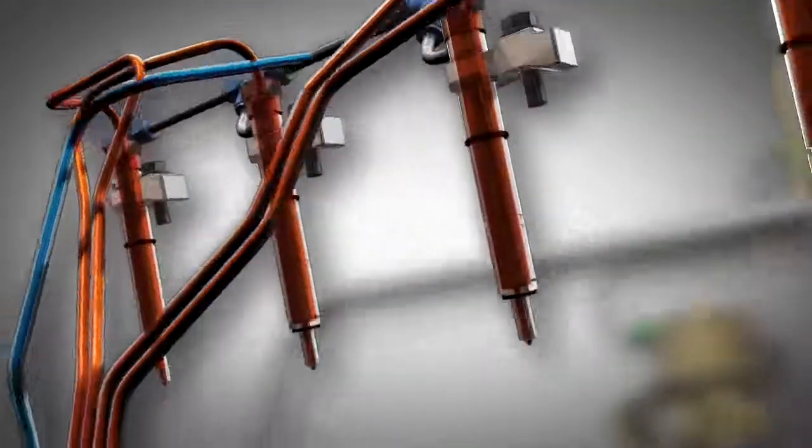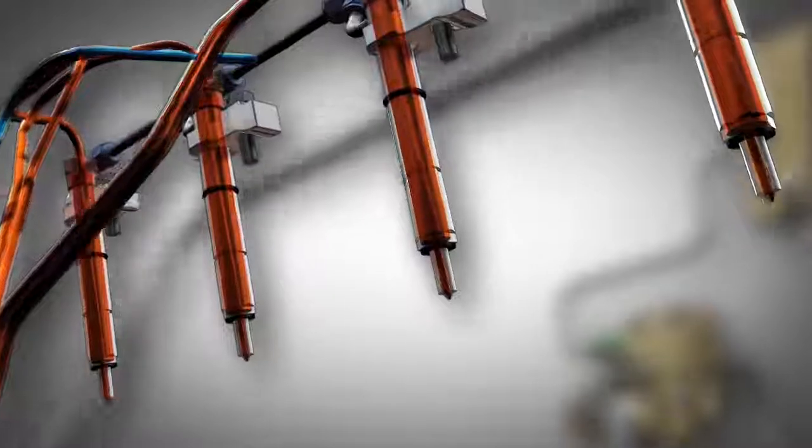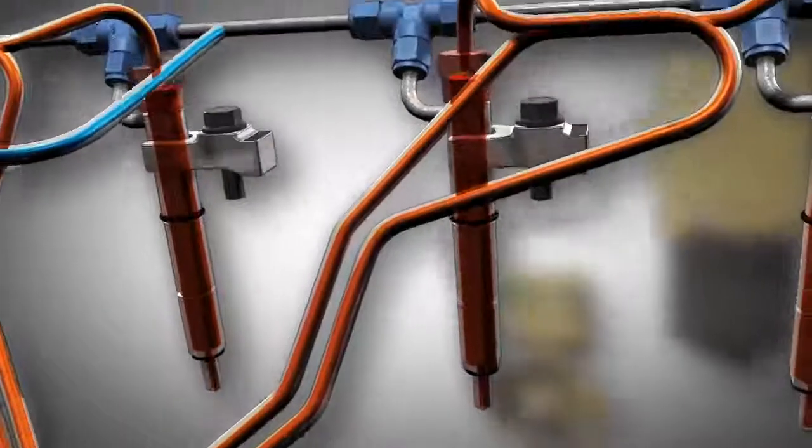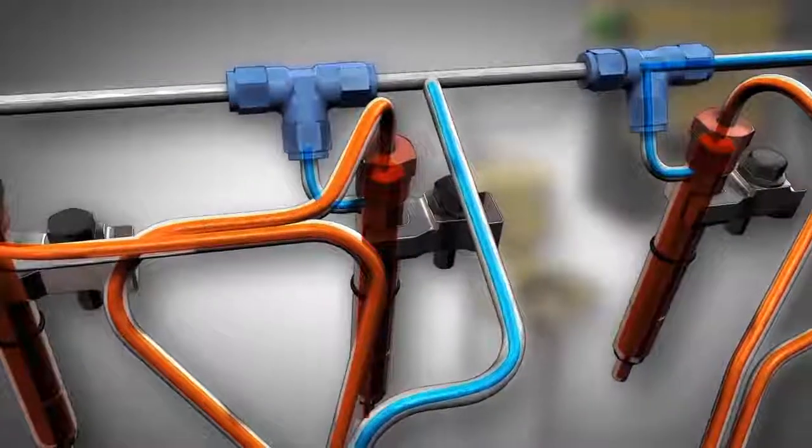A quantity of fuel greater than that required by the engine is supplied to the fuel injection pump, so fuel is routed to a return line from the pump. Unused fuel from the fuel injection nozzles is also routed back to the fuel tank.